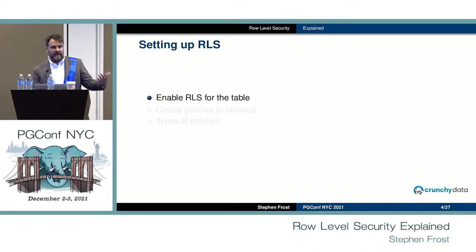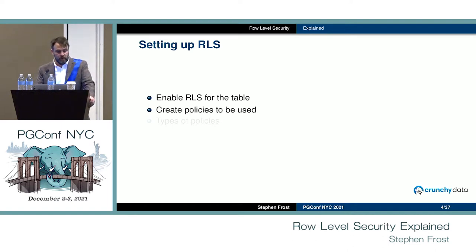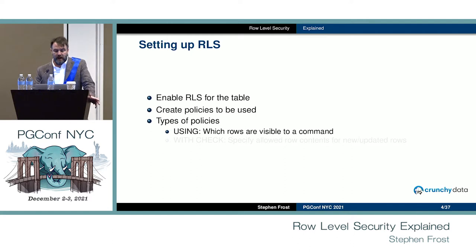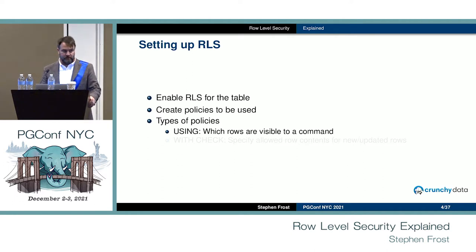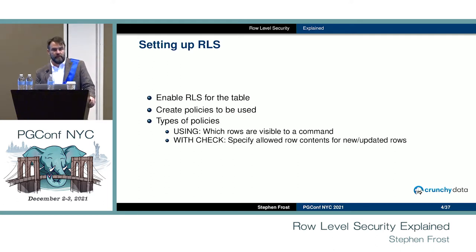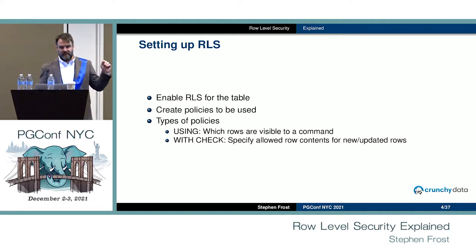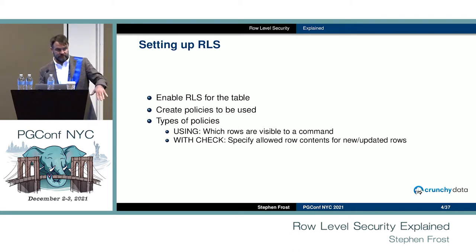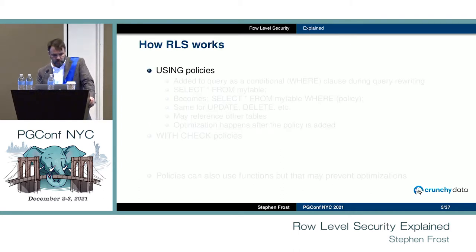When you want to set up RLS, there are really just a couple of main things to do: enable row level security on the table itself, and then create whatever policies you want. There are two types of expressions used with policies. The first is a USING expression — it says what rows in the table are visible to whatever the executing command is. The WITH CHECK expression says what data in the row is allowed to exist in either new or updated rows.